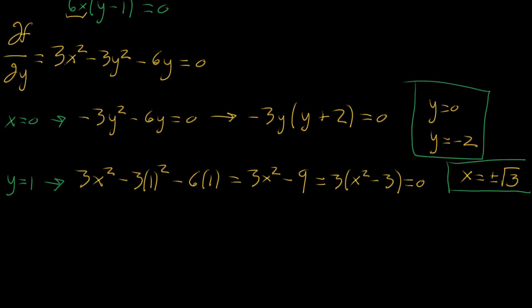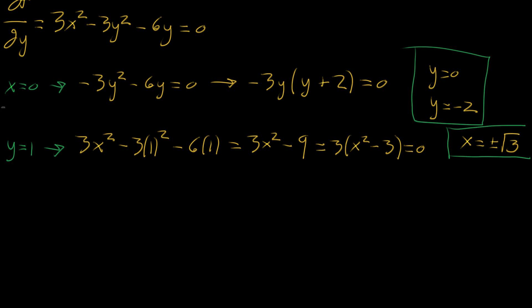This gives us a total of three different critical points. In the first situation where x = 0, both critical points have x-coordinate zero, with y-coordinates of 0 or -2. So we have (0, 0) and (0, -2). When y = 1, we have x = ±√3, giving us (√3, 1) and (-√3, 1). These are the critical points, which means all partial derivatives are equal to zero.